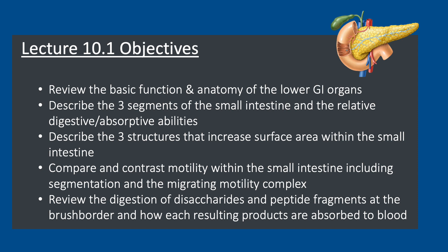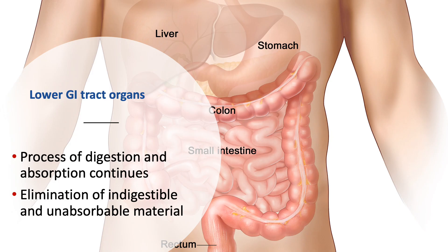We'll start today looking at the basic function and anatomy of the lower GI organs. Both digestion and absorption will continue within the lower GI tract organs, and notably the majority of absorption will occur within this lower section. Also, we'll see that those materials that can't be digested or absorbed will be eliminated.